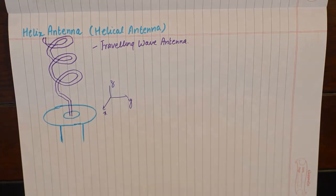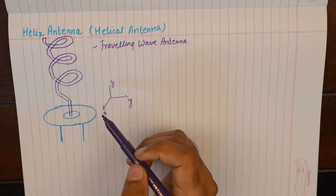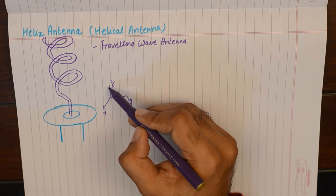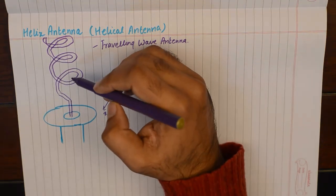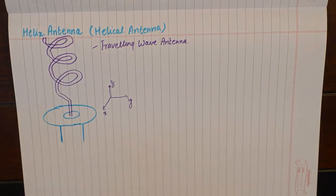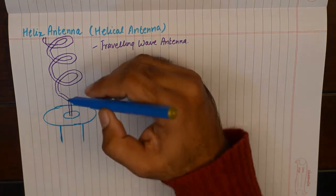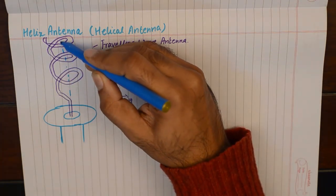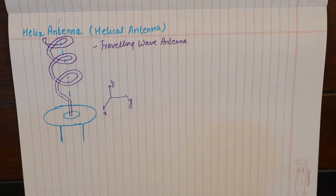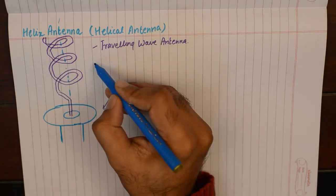This antenna is going to radiate in the direction of the axis of the helix. If we consider the axis of the helix to be right across the center of the helical antenna, this is going to radiate all its energy in the axial direction, which will be Z in this case.